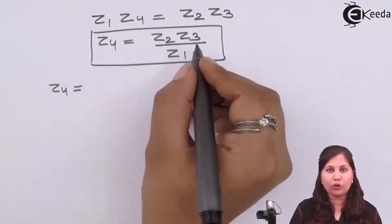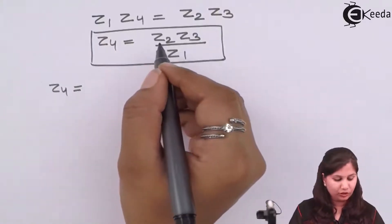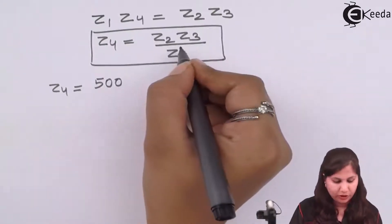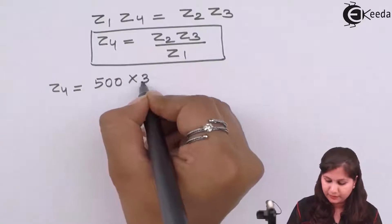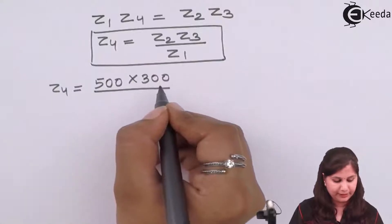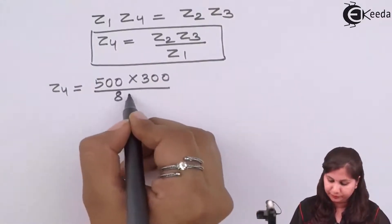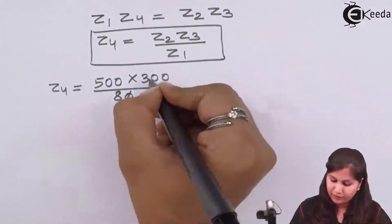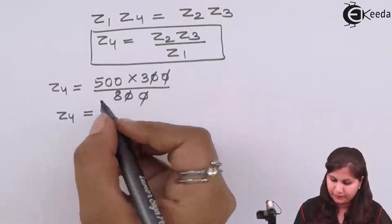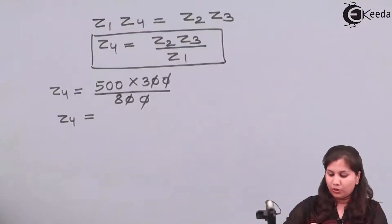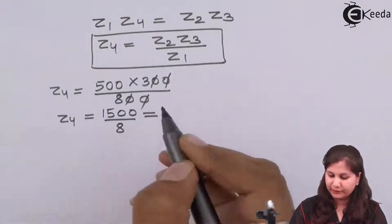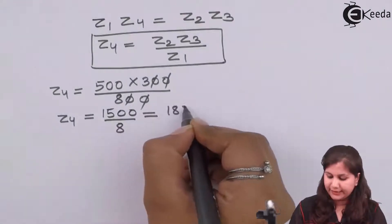Putting in the values: Z2 = 500 ohms, Z3 = 300 ohms, and Z1 = 800 ohms. So the magnitude of Z4 = (500 × 300) / 800 = 1500/8 = 187.5 ohms.